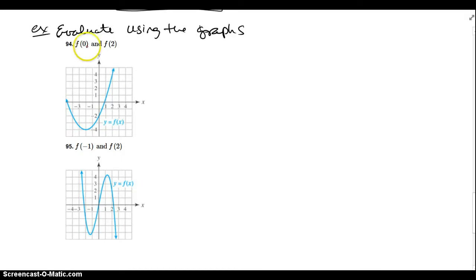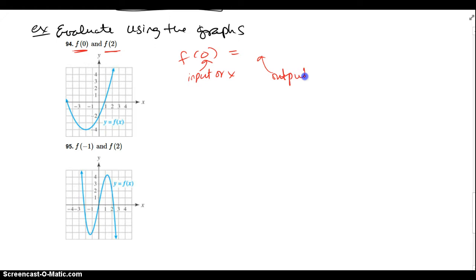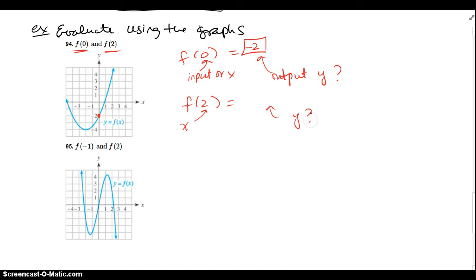Now let's evaluate functions graphically. For f(0), the input or x is 0. I go to x-coordinate 0 on the graph and read the y-value, which appears to be negative 2. For f(2), I go to x equals 2, walk over to the y-value, and it looks like I need to go up 4 units — so the output is 4. The ordered pairs are (0, −2) and (2, 4).